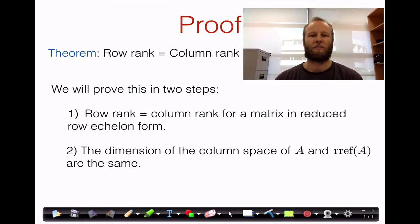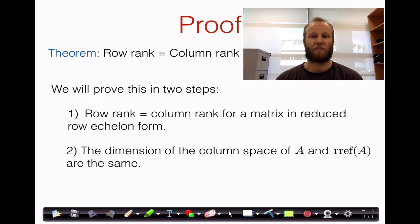In this video, we're going to finish the proof that the dimension of the row space of a matrix is equal to the dimension of its column space. We've already done the first step — that was to show that the result is true in the special case of a matrix in reduced row echelon form.